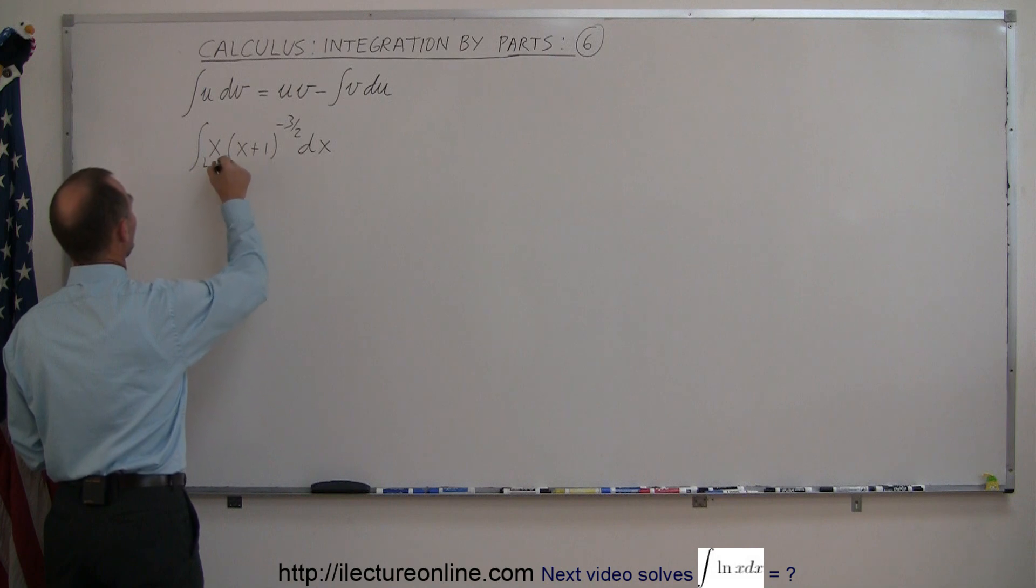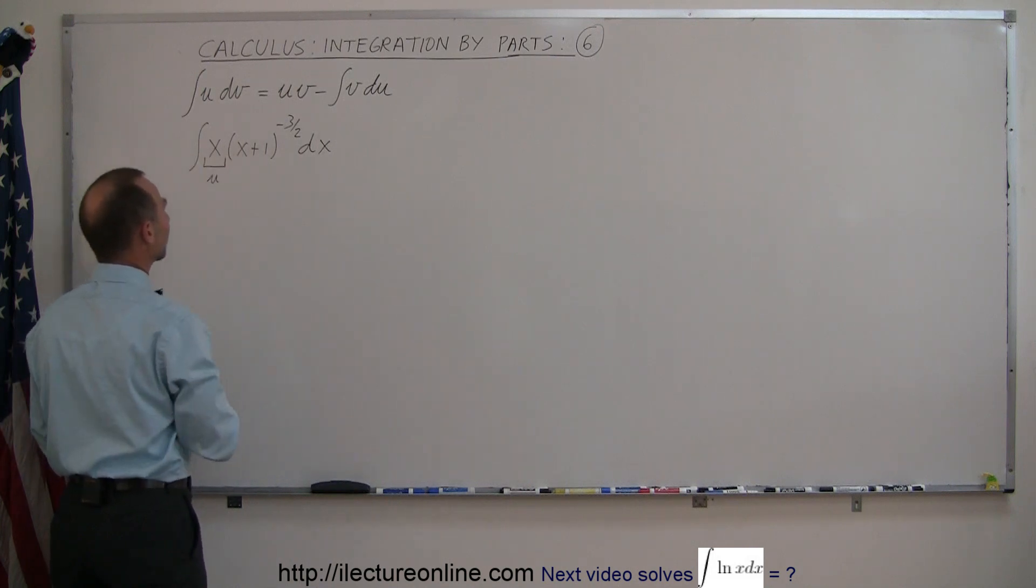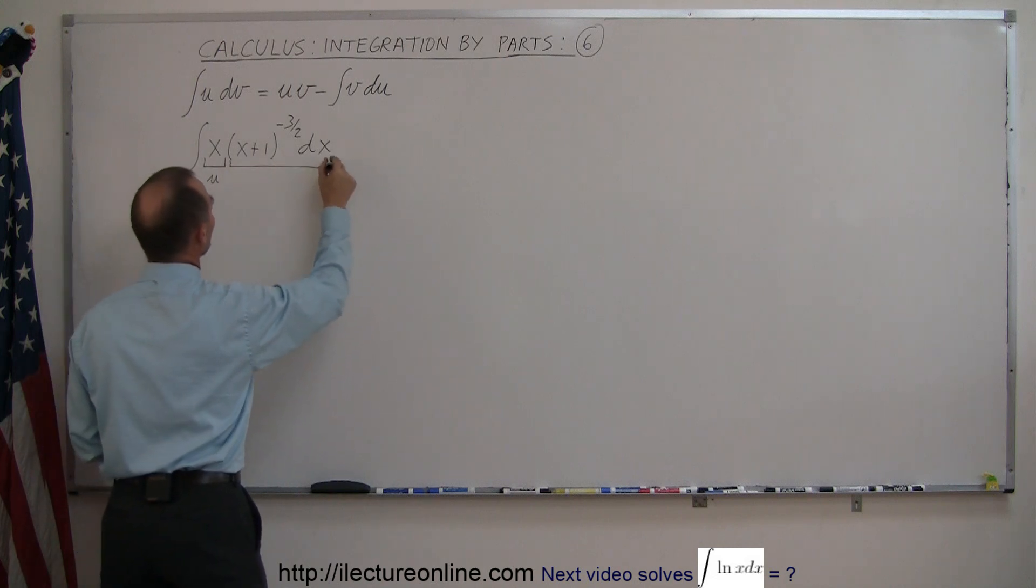I'm going to call this u because when I take the du then the x disappears. And let's call this portion then dv.